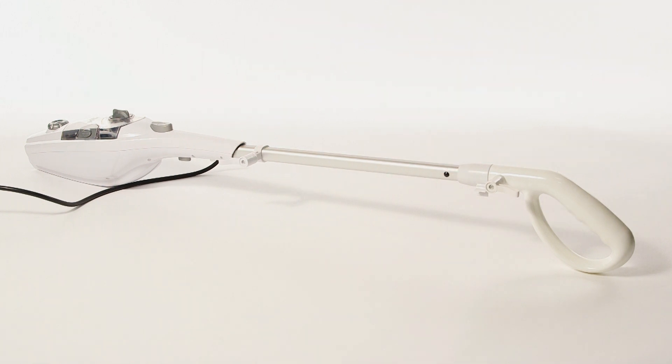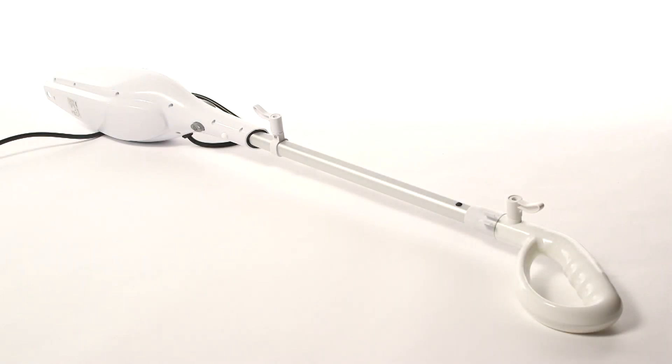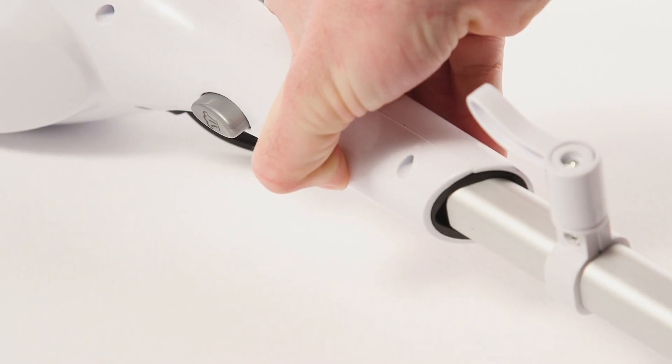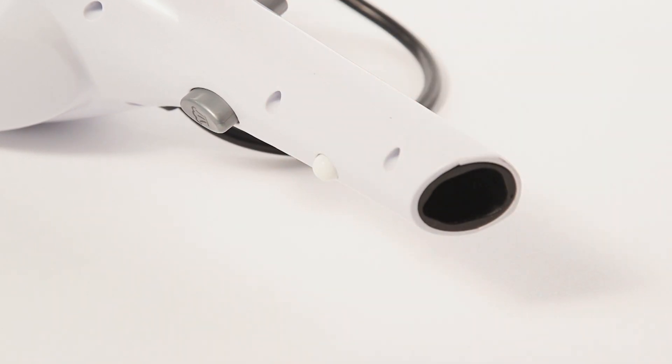To disconnect the extension tube, press the button on the steam cleaner body. Then pull the extension tube away from the steam cleaner body.